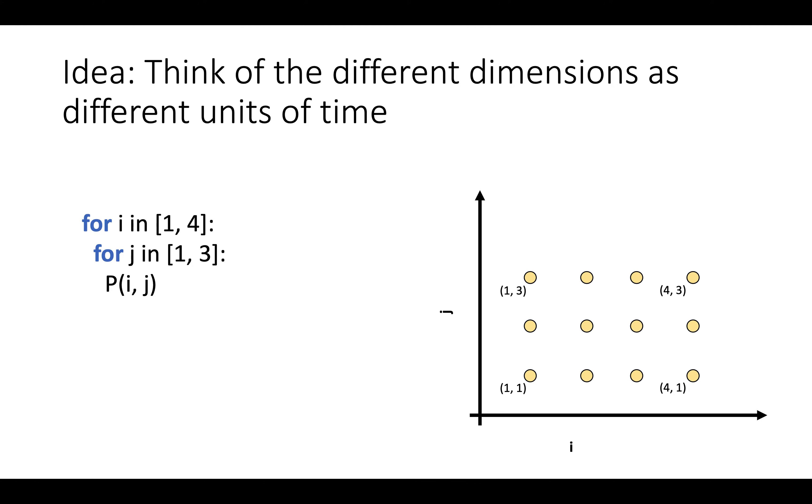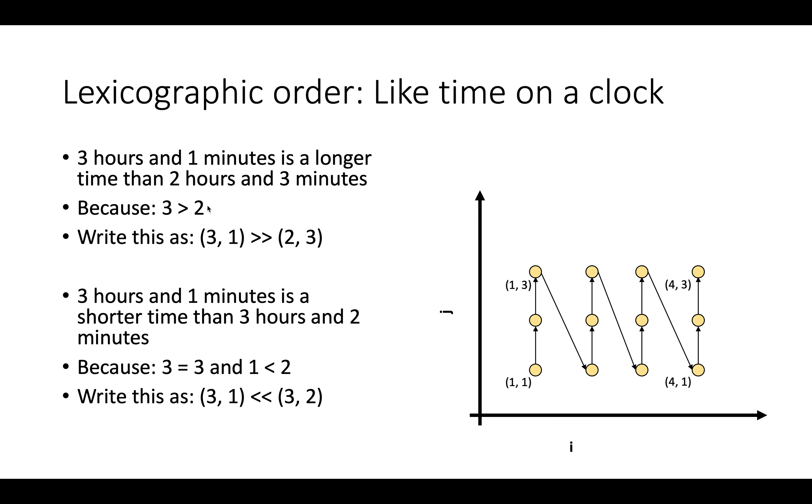Well, the idea, the intuition behind the idea, is to think of the different dimensions as different units of time. So you can kind of think of, for example, i as representing hours and j as representing minutes, if you like, and then we'll impose an ordering, or represent the order of events in this program, using what's called lexicographic order.